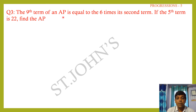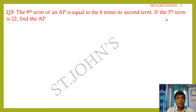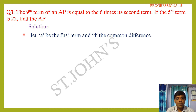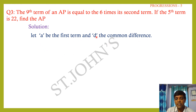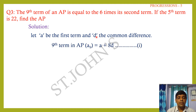Solution: Let a be first term and d be common difference. 17th term exceeds 10th term by 7, so a₁₇ − a₁₀ = 7. That is (a + 16d) − (a + 9d) = 7.